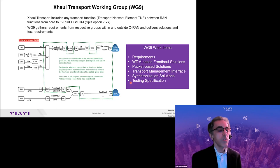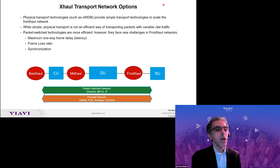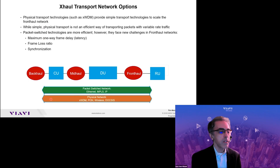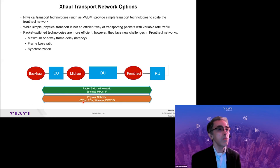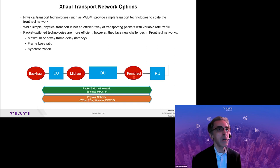We have been active now more than three years in Workgroup 9. In terms of transport options, at a basic level we have physical networks that could be WDM — it could be just a piece of fiber, a cable connecting the RU with CU or DU — or WDM-based solutions, PON, microwave, DOCSIS. Some of them may not be quite suitable for front-haul, which has strict latency requirements and synchronization aspects.